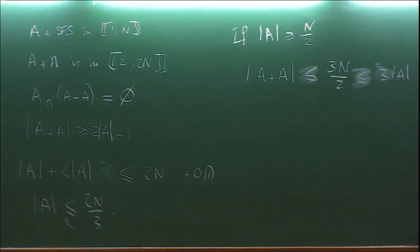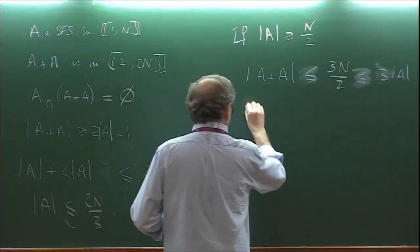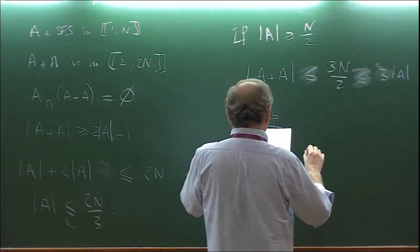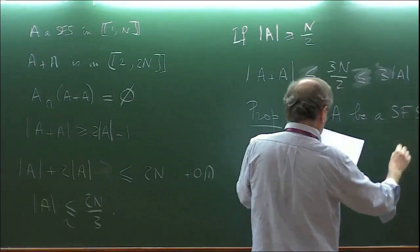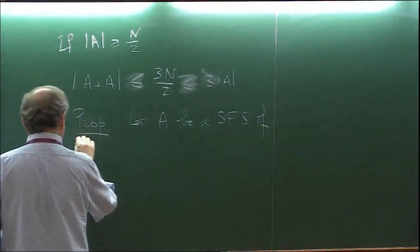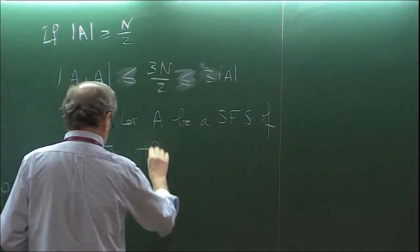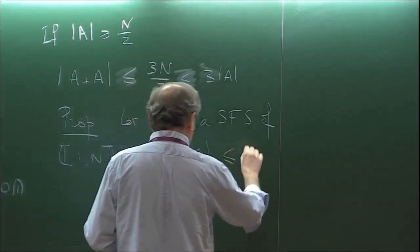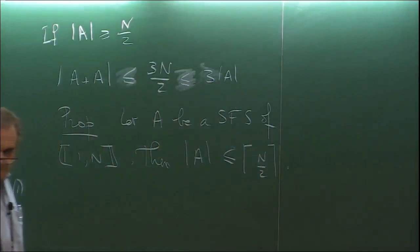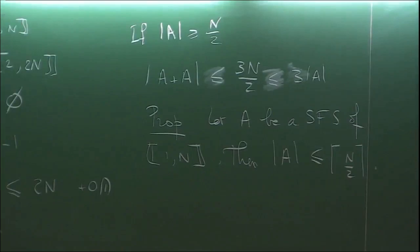Let us go to the first result. It's not very strong, but we start with it. Proposition: let A be a sum-free subset of {1,...,N}. Then |A| ≤ ⌈N/2⌉.